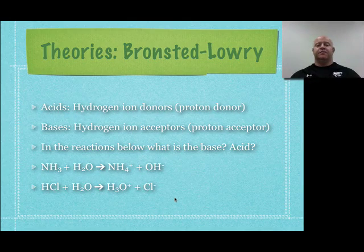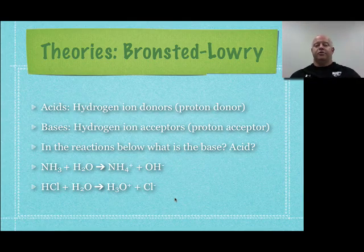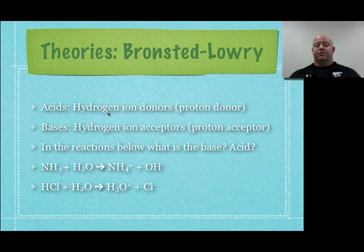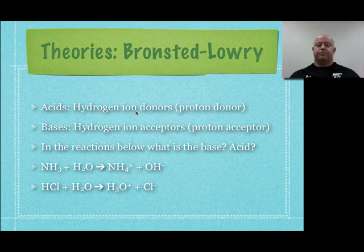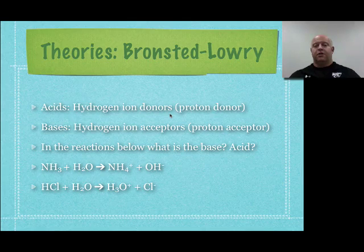Our next definition is the Bronsted-Lowry definition. Bronsted and Lowry took the idea of acids and said that instead of just saying they ionize hydrogen, in a chemical reaction they can actually donate it to another chemical. In their definition, acids are hydrogen ion donors. If you recall, hydrogen has just one proton and one electron — so a hydrogen ion is just a proton. So really, acids are proton donors. If they donate protons to make a chemical bond, that's an acid.